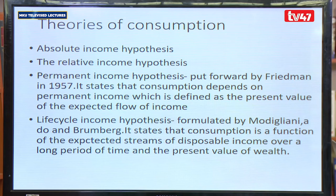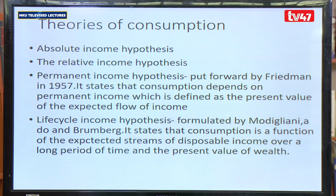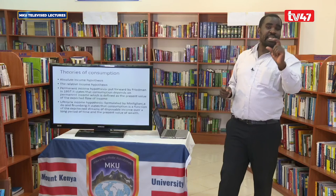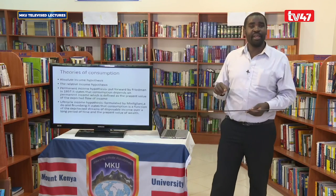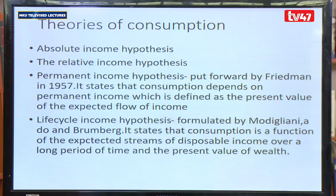Then we have the life cycle income hypothesis, formulated by Modigliani and Brumberg, which states that consumption is a function of the expected streams of disposable income over a long period of time and the present value of wealth. It is a combination that factors in the permanent income hypothesis — an improvement of it — which says that a person makes a decision on their level of consumption depending on the future flow of income as well as the net present value of their wealth.